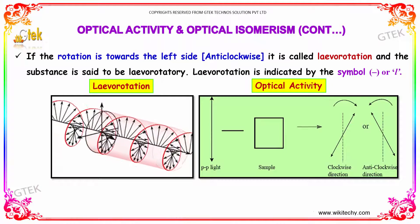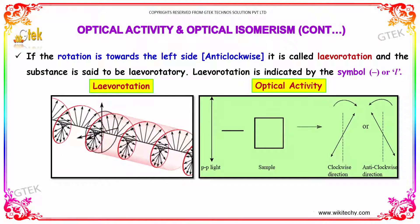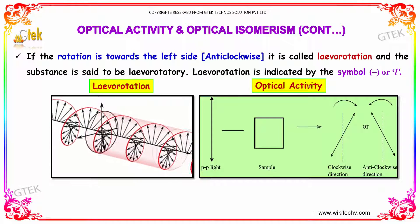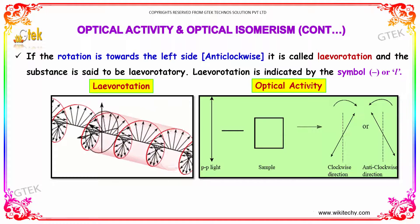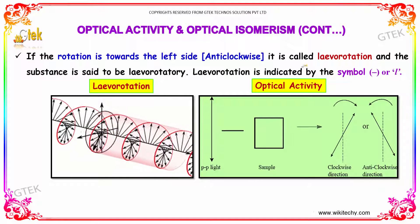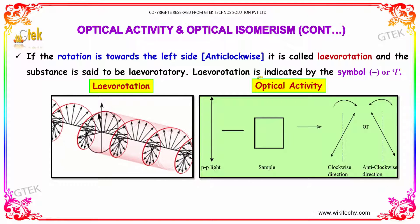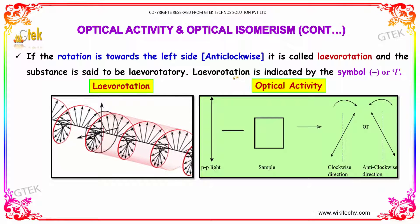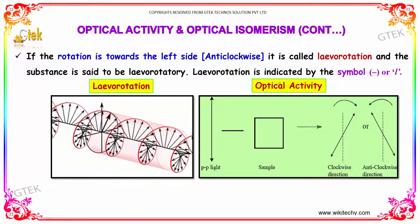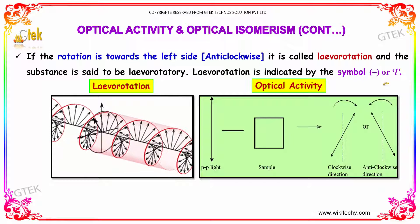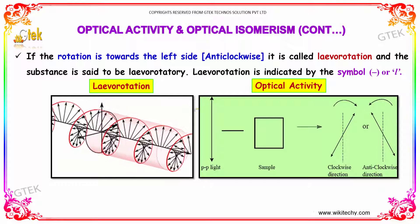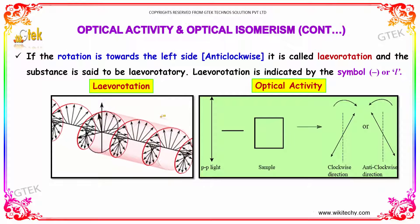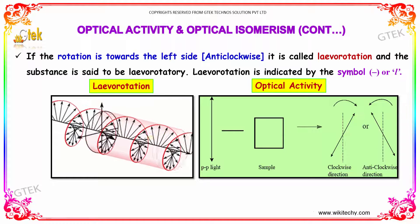Whereas if the rotation is towards the left side, that is in the anticlockwise direction, it is called levorotation, and the substance is said to be levorotatory. Levorotation is indicated by the symbol minus or L.